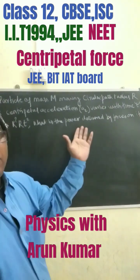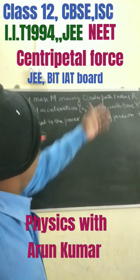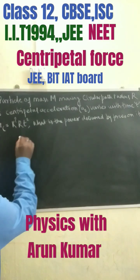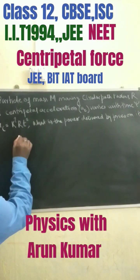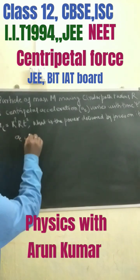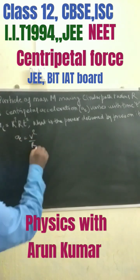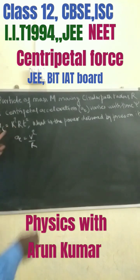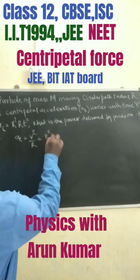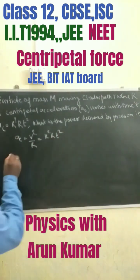Let V be the velocity of the particle in the circular path. Then we have centripetal acceleration AC equals V square by R. But it is given that this equals K square R T square.